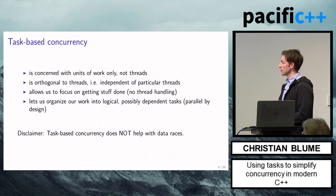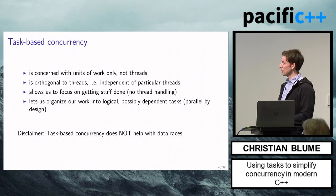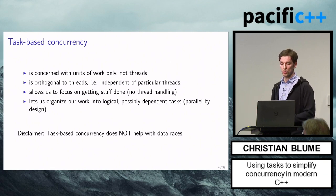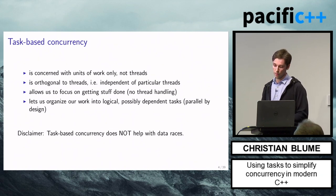Task-based concurrency is concerned with units of work only, and not with threads. It's actually well-designed to be orthogonal to threads — simply independent of particular threads. This allows us to focus on getting stuff done because we don't have to deal with explicit threads, and tasks are not explicitly tied to explicit functions. It also lets us organize our work into logical and possibly dependent tasks, giving you parallelism by design. Obviously it's not magic and does not help with data races — if you have memory shared across threads, you may still have to protect that.